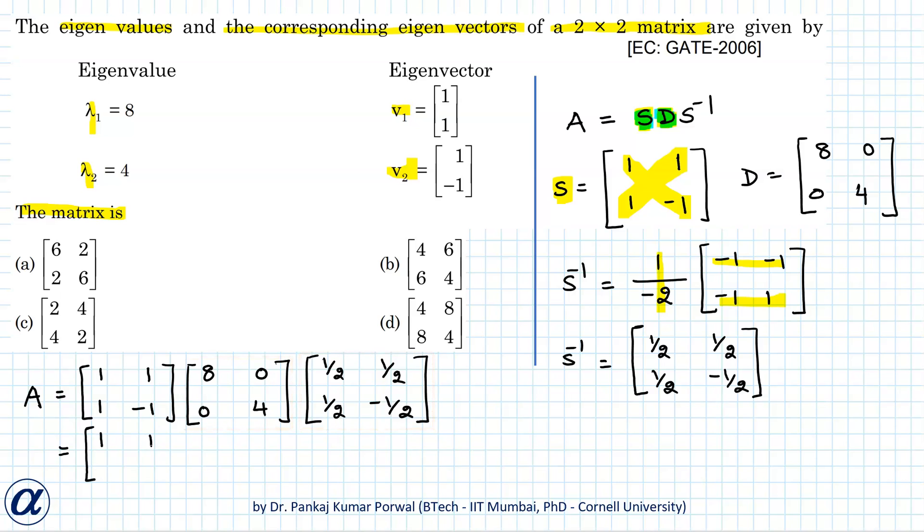So I get 1, 1, 1, minus 1. Here this will be multiplied with this. So I get 4, then this will be multiplied with this. So I get 4, then this will be multiplied with this. So I get minus 2, and again if I multiply these two matrices I get 6, 2, 2, 6. So option A is correct.